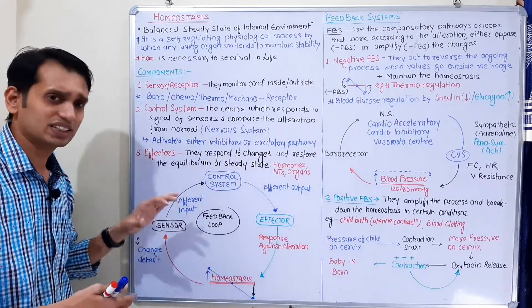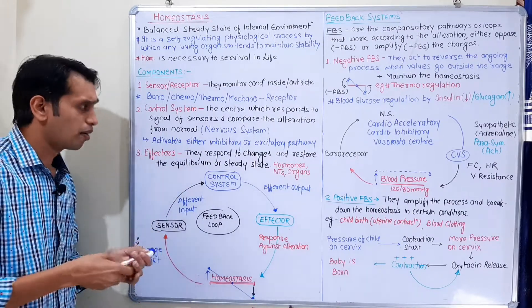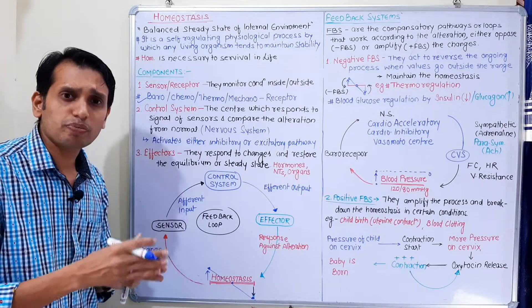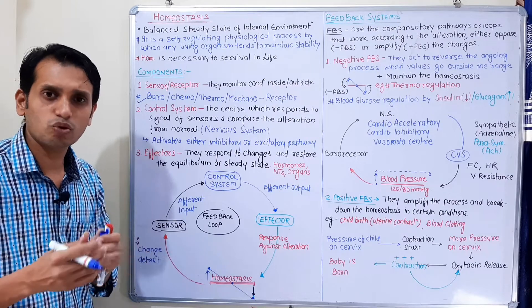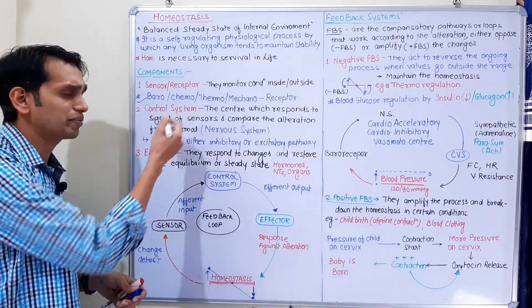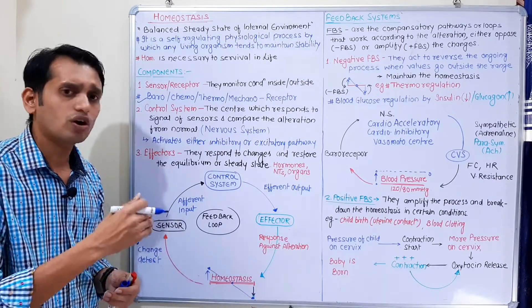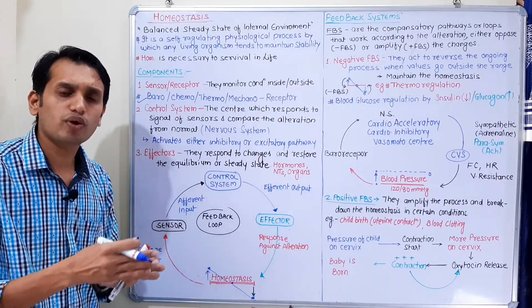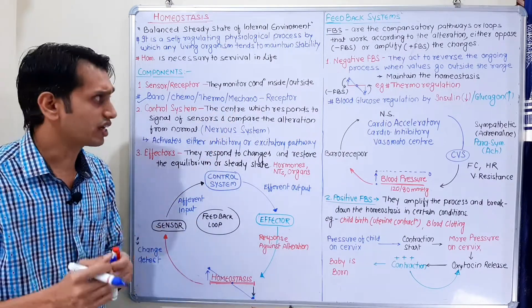Now let's talk about the different types of sensors. First are baroreceptors — receptors that sense alterations in pressure, functioning as a pressure monitoring system for blood pressure. When pressure is lower it can be increased. Then there are chemoreceptors, which respond to changes in the chemical environment. Next are thermal receptors, which monitor temperature. Finally, mechanical receptors monitor mechanical changes within the body. These are the basic receptor types.